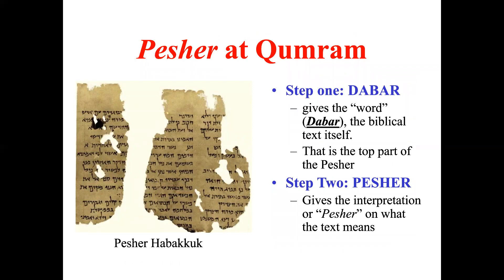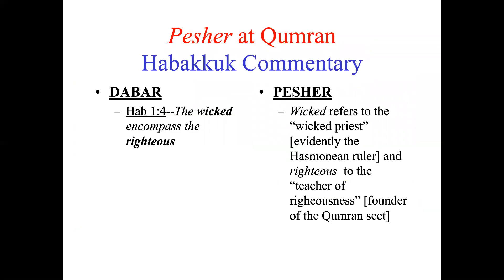The way they did their commentaries was, first of all, to begin by quoting the text. The quoted text is called the davar — the Hebrew word for word. They would give the davar, the Hebrew text itself, at the top of the Pesher. Then underneath they would give the Pesher, or the interpretation of what the text means. An example is the scroll on Habakkuk, the Pesher of Habakkuk.